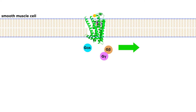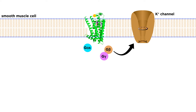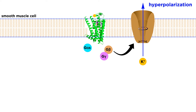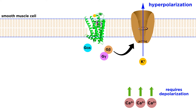It is worth considering the role of the G-beta–G-gamma dimer-related signaling too. Once this dimer has dissociated from the G-protein heterotrimer, it is able to activate potassium cation channels. This leads to an efflux of potassium ions down their concentration gradient, hyperpolarizing the smooth muscle cell. Depolarization of the smooth muscle cell is required to release calcium ions from intracellular stores, so this activity results in lower mobilization of calcium ions.